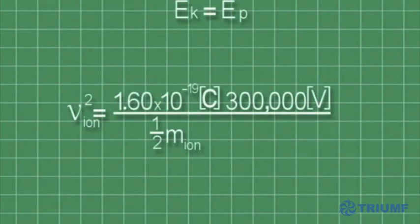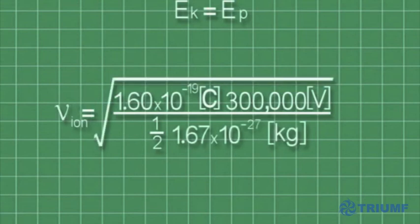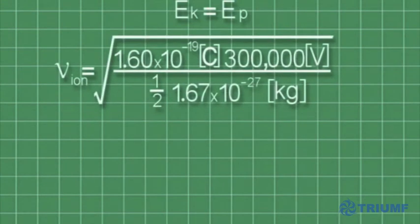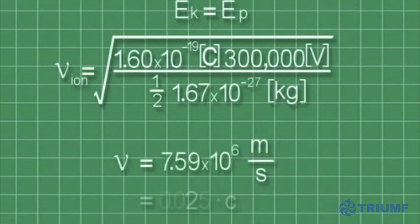Once again, we plug in these known values into our equation. Taking the square root, we discover that the ions are now traveling at 7.6 million meters per second, or approximately 2.5% the speed of light. This is fast, but still slow enough so relativity does not come into play.